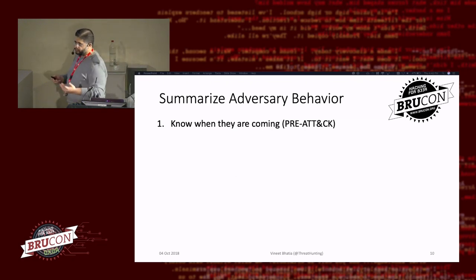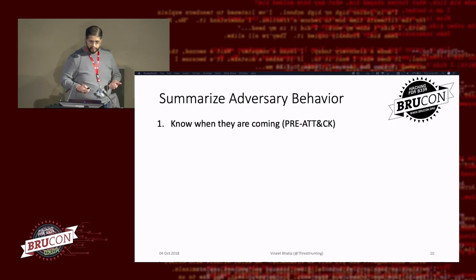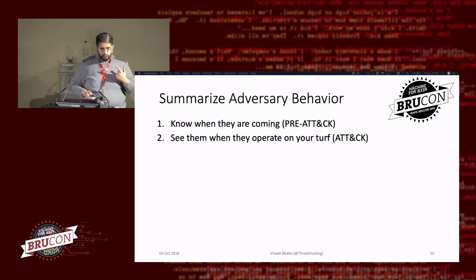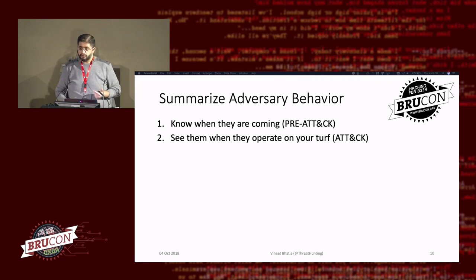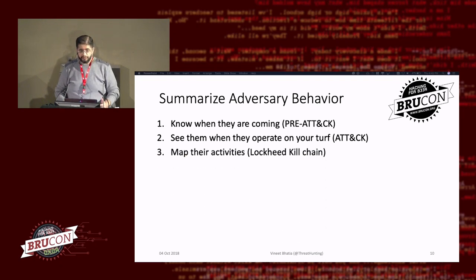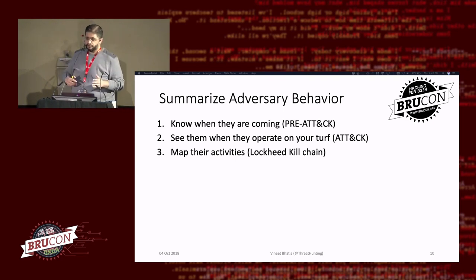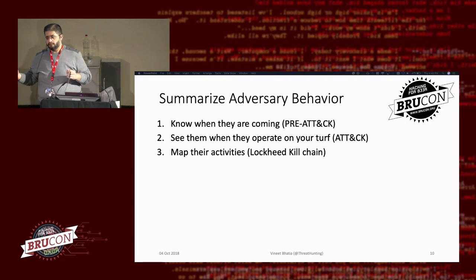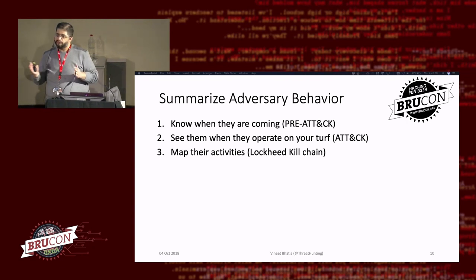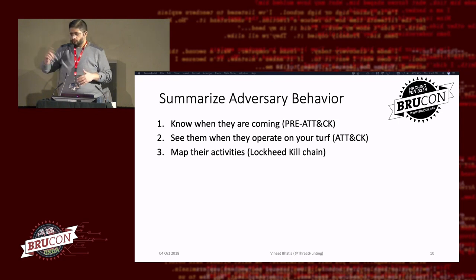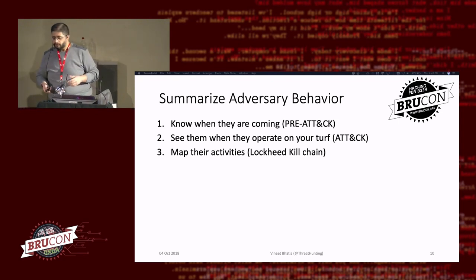What are we really trying to do? We're trying to summarize attacker behavior. We want to know when they're coming. We want to see them when they're on our network. We want to restrict them to specific parts of the network and control them. We want to map their activities — break it down to see at what part of the kill chain they're currently operating. If you see an adversary who's already progressed to C2, jump to mitigation. But if somebody's performing recon, don't immediately go blocking firewall rules.